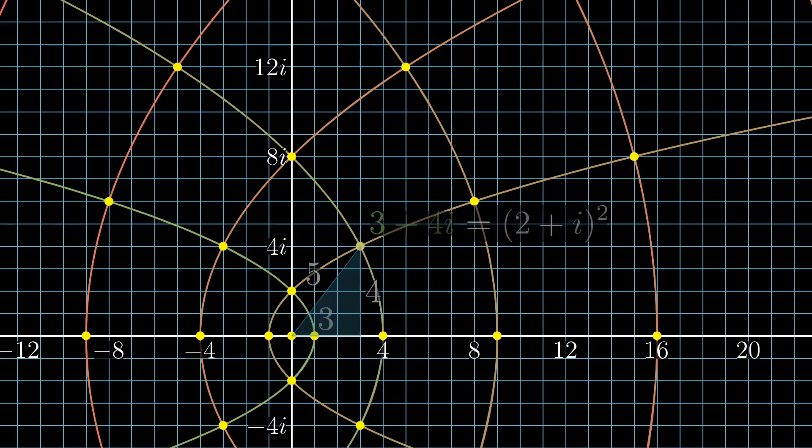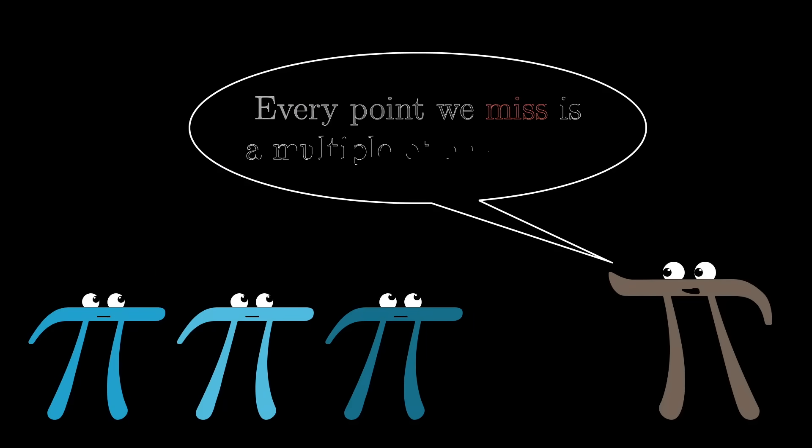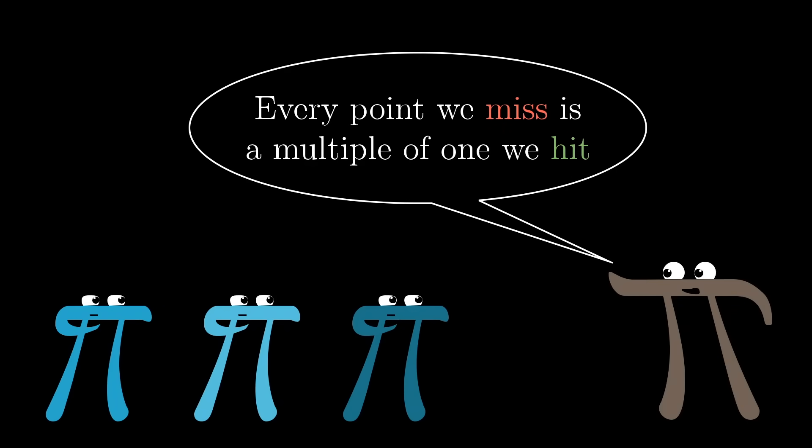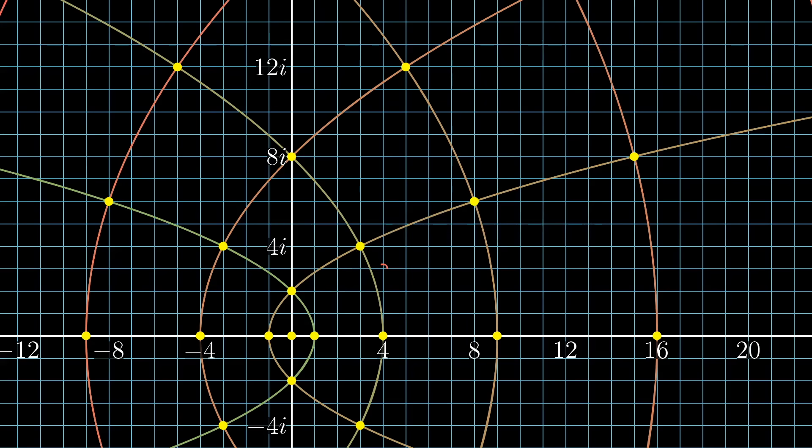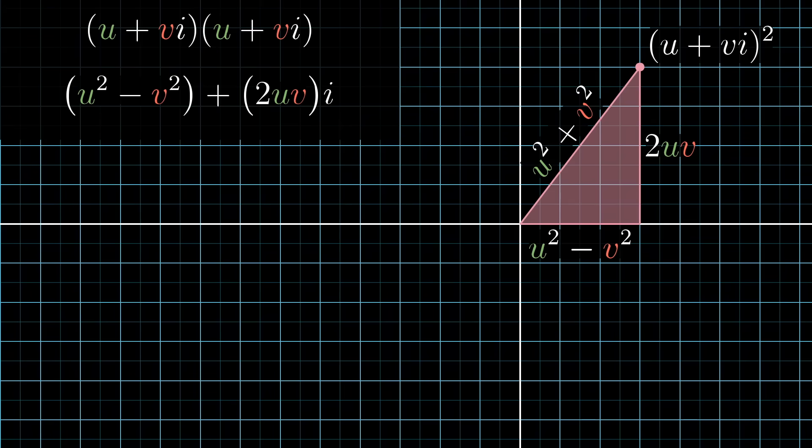In fact, for reasons that I'll explain shortly, every possible Pythagorean triple that we miss is just some multiple of a different triple that we hit. To give another example, we miss the point 4 plus 3i. There are no integers u and v so that u plus vi squared is 4 plus 3i. In fact, you'll never hit any points whose imaginary component is odd.